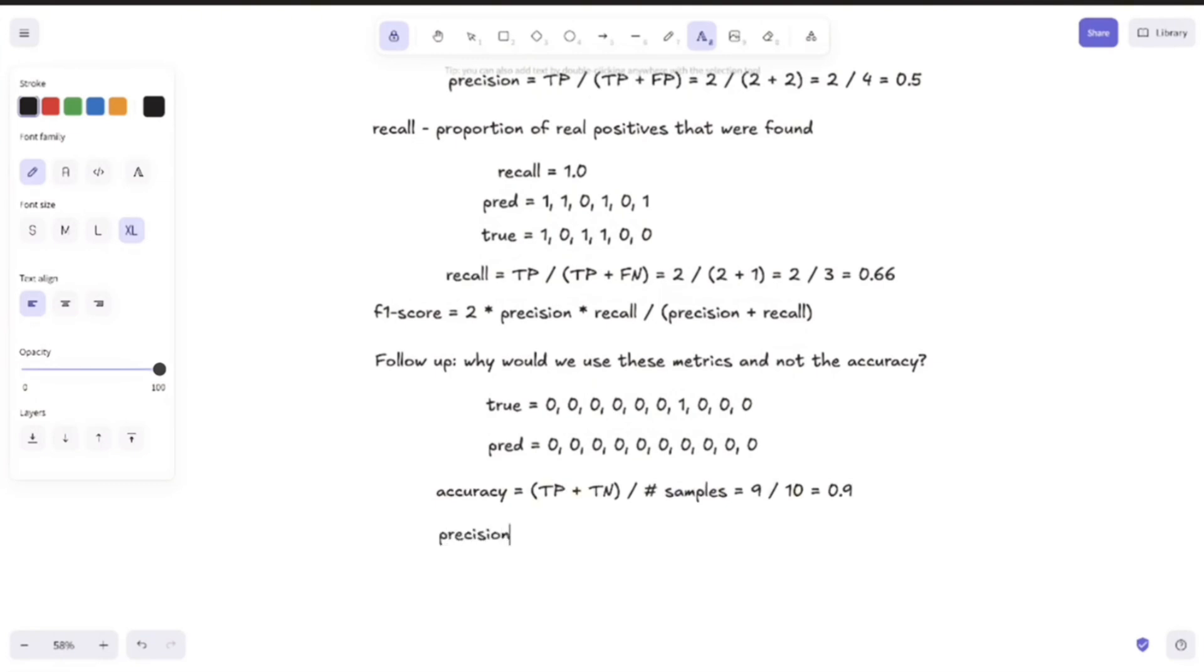On the other hand, the precision in this case is equal to 0 divided by 0 plus 0, which is undefined, but in most libraries this will be equal to 0. And also the recall would be equal to 0 divided by 0 plus 1, because we have a false negative here. So the recall would also be equal to 0.